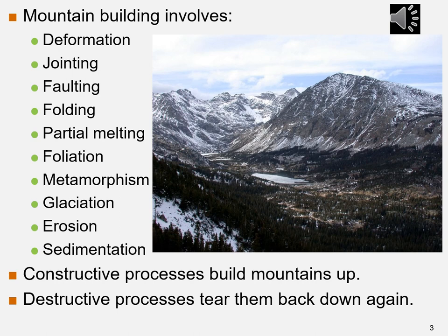And sedimentation. Some mountains occur along convergent boundaries, some due to collision of continents, and some from continental rifting. Mountain building involves two processes: a constructive process that builds mountains up, and a destructive process that tears them back down again, such as the glacial valley shown in the image, which is still occurring in the inactive Sierra Nevada Range.